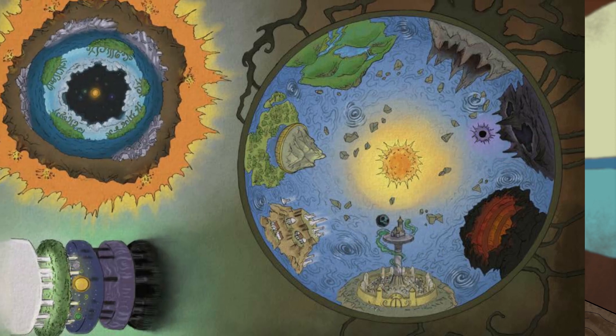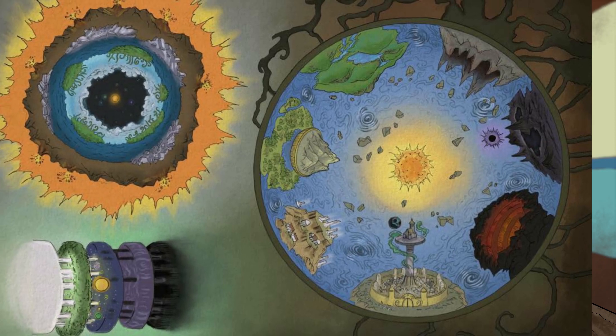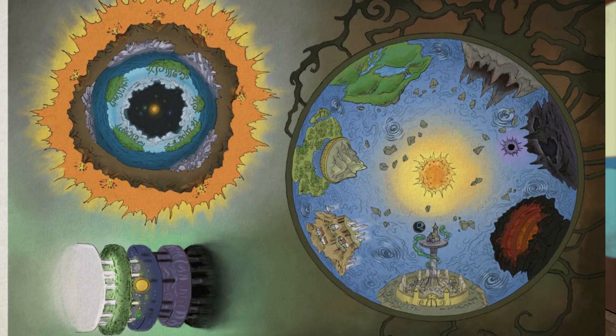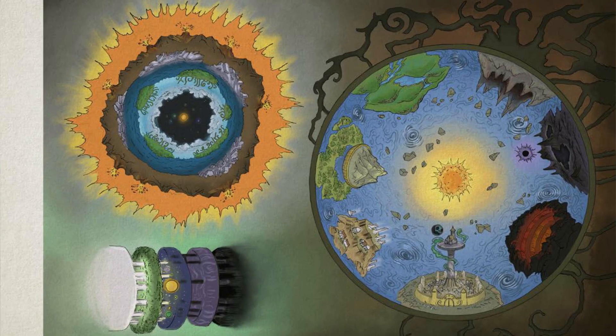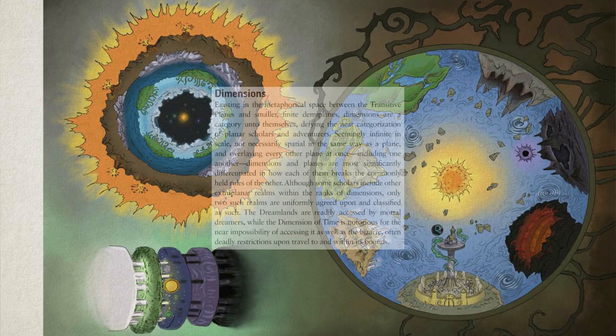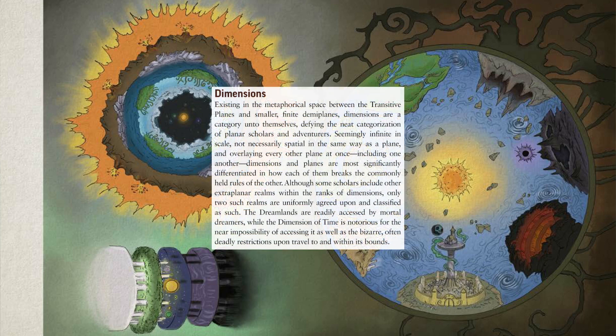That covers all the planes, but we aren't quite done. There is another category that breaks the rules of planar travel. Dimensions overlay all planes, but they aren't transitive planes. They are infinite, but not exactly spatial.